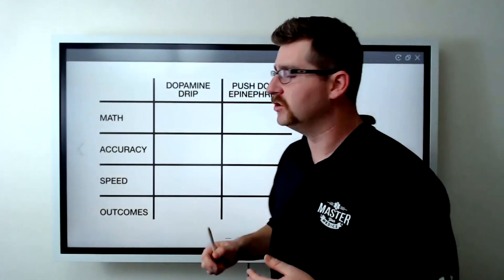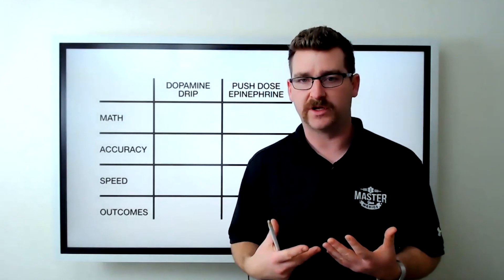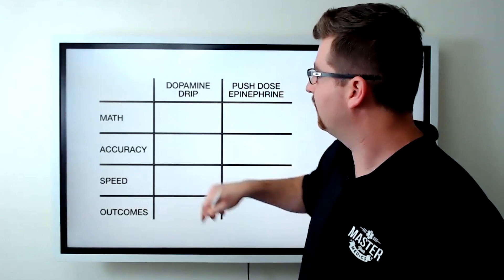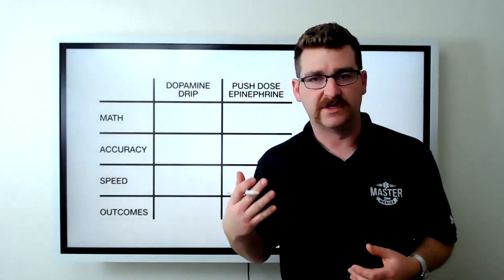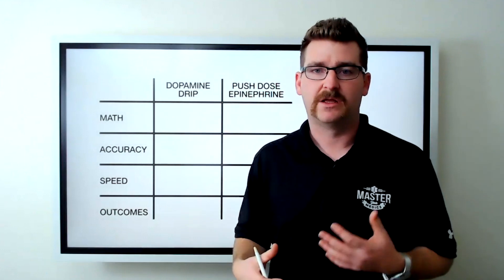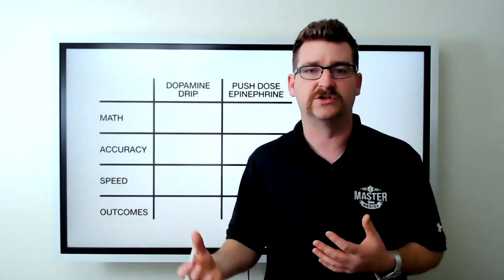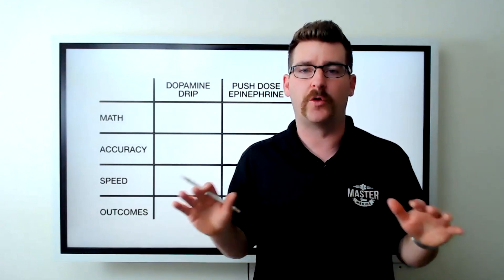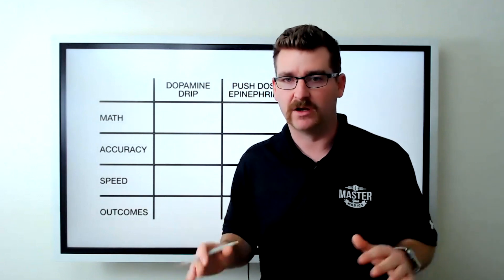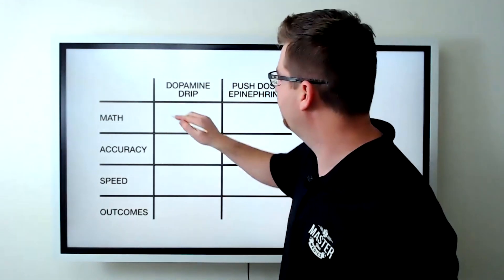First off, dopamine is kind of the traditional vasopressor that we use in the pre-hospital setting. Let's compare it to Push Dose Epinephrine. The math on dopamine, 5 to 20 micrograms per kilogram per minute, then we've got our 60 drip set, a 1600 to 1 concentration. It's terrible. It's miserable. It's the bane of all paramedic students worldwide. We can't do all that math in our heads and it just sits there and would take forever.